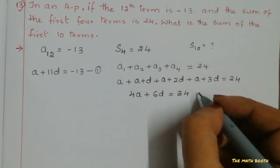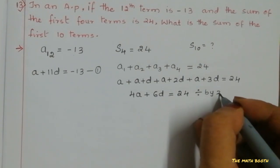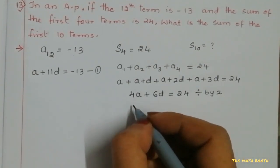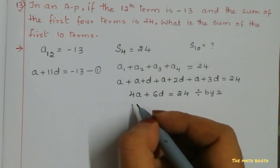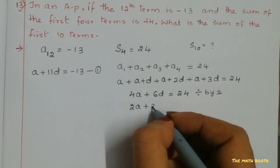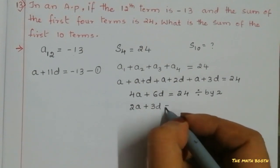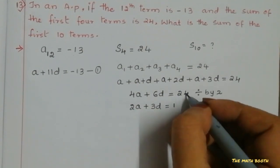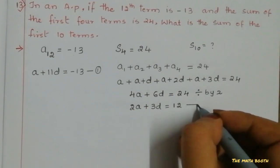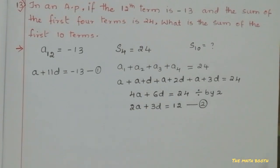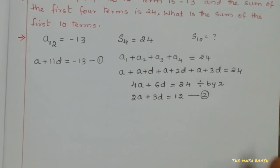Now we can see here all numbers are divisible by 2, so let us divide this equation by 2. If we divide, 2 into 4 is 2, so 2a; 2 into 6 is 3, so 3d equals, 2 into 24 is 12. So this is equation 2.